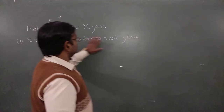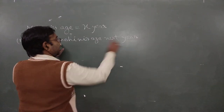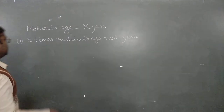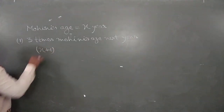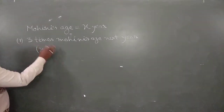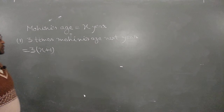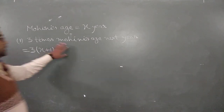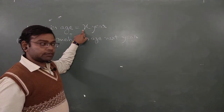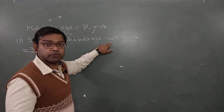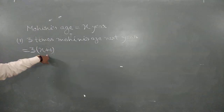Three times Mohini's age next year: present age is X, next year is X plus 1, and three times that is 3 into (X plus 1). So the answer is 3(X+1).